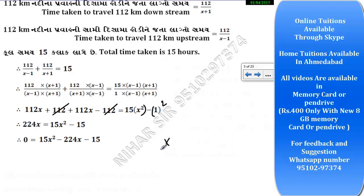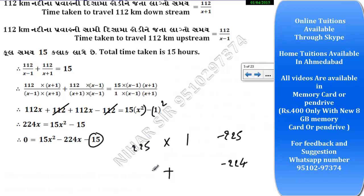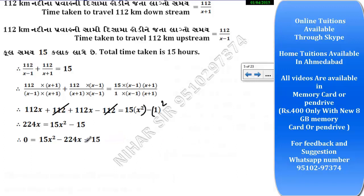Now to factor this quadratic, we need two numbers that multiply to give 225 (which is 15 × 15) and add to give minus 224. Those numbers are minus 225 and plus 1 — because minus 225 plus 1 equals minus 224, and minus 225 times 1 equals minus 225. So the partitions are minus 225x and plus 1x.